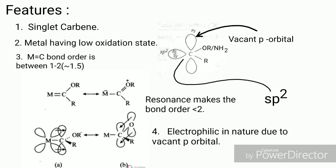As I said, in Fischer carbene, metal having low oxidation state. The metal carbon double bond order is nearly 1.5, or accurately the bond order is between 1 and 2.